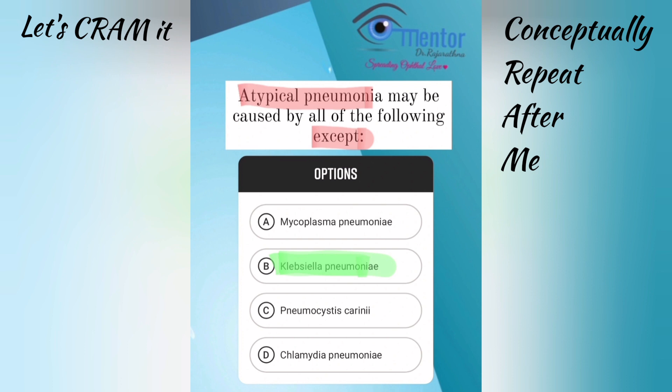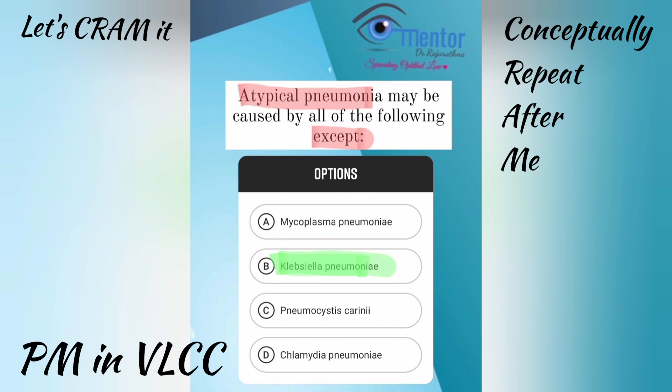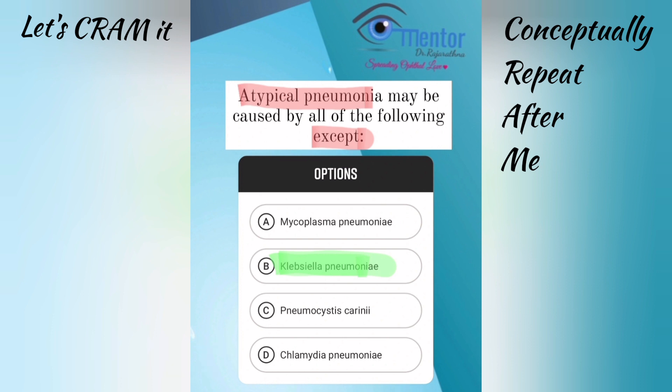For other organisms causing atypical pneumonia, use the mnemonic PM in VLCC. M is Mycoplasma pneumoniae. P is Pneumocystis. V is virus. L is Legionella. C is Coxiella. Another C is Chlamydia — specifically Chlamydia pneumoniae, not Chlamydia trachomatis.